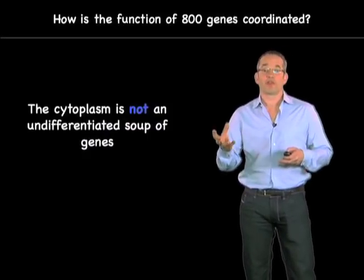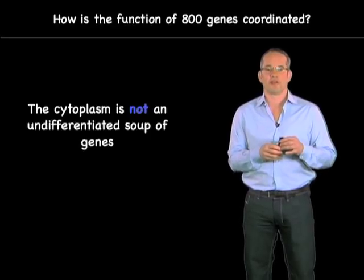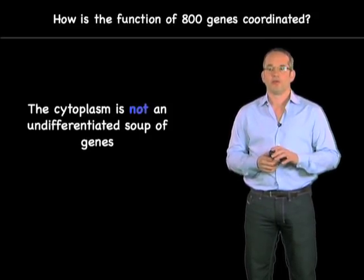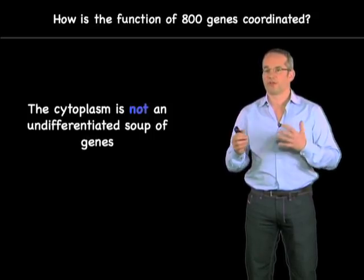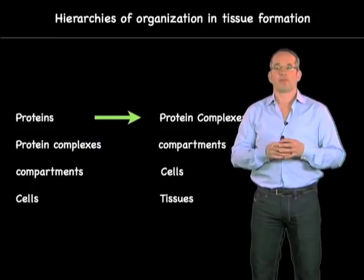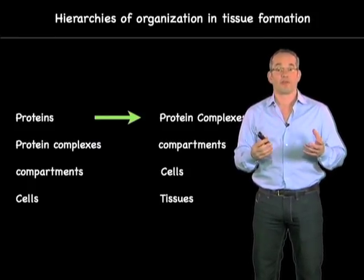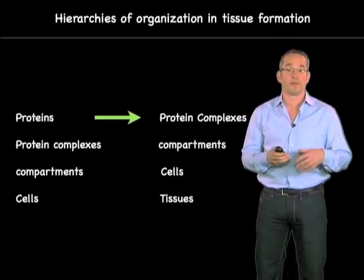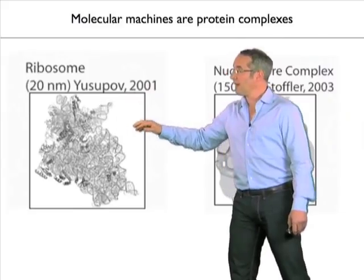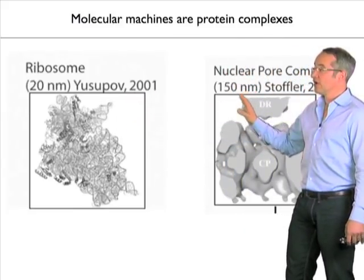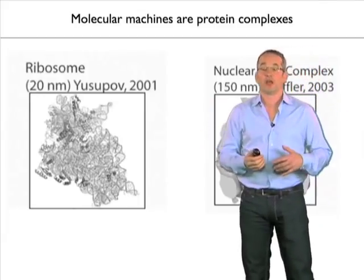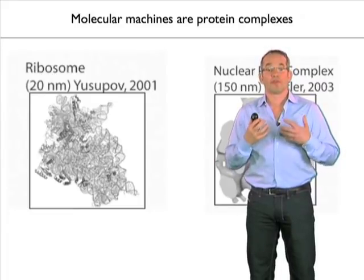One thing to remember when thinking about how the function of 800 genes is coordinated: the cytoplasm is not an undifferentiated soup of proteins. You can't think about the cytoplasm as a set of 800 proteins floating around and somehow organizing a cell division. Most proteins appear to function in protein complexes with other proteins. Some of those protein complexes are very sophisticated with many different proteins — the ribosome, for instance, has over 100 proteins.